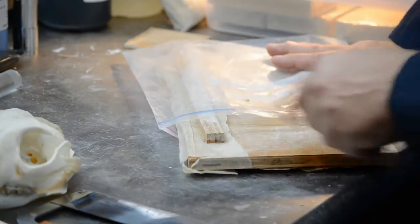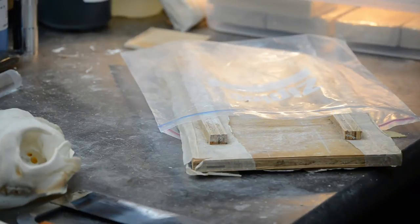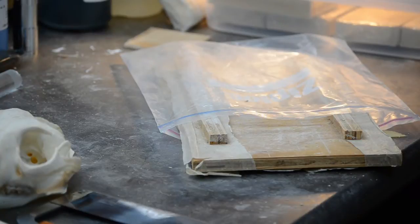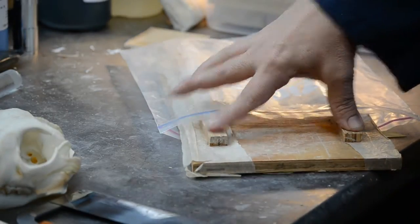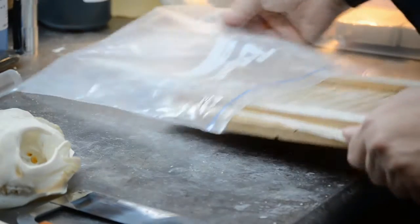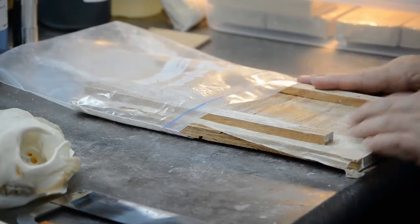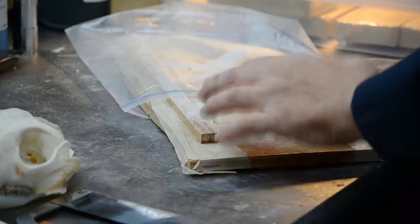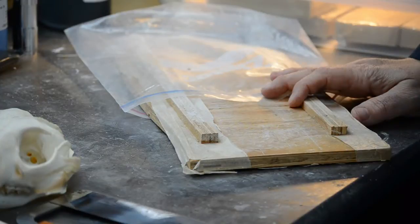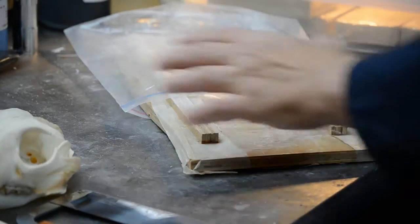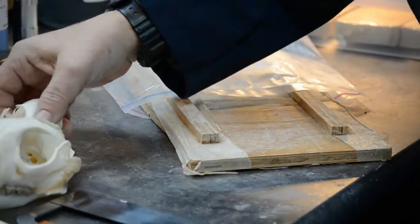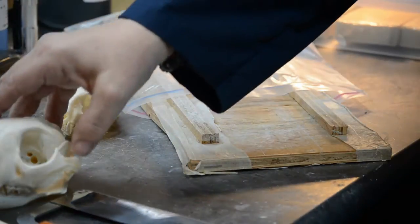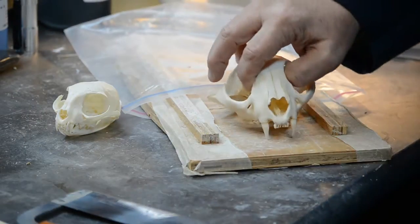You'll notice there are little runners on this plywood board. The reason for those is quite simple: the height is even on both sides. This will allow me to roll my clay to a specified height. You can stack clay pieces on top of each other to create a deeper bed for the skull, depending on the size.